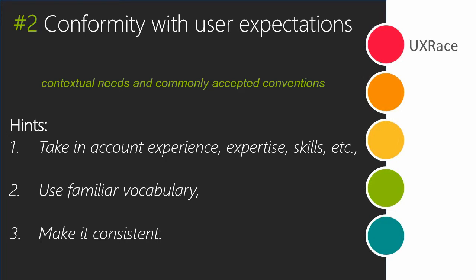The second principle is conformity with user expectations. A dialog should correspond to the contextual needs of the user and commonly accepted conventions. The user's experience, expertise, and skills should be taken into account. The dialog should be consistent. And if for some reason a dialog is going to violate the user's expectations, it should first inform the user. But if you are inventing the future and just cannot make it conform with anything, then double-check that your product is at least self-descriptive and easy to learn.